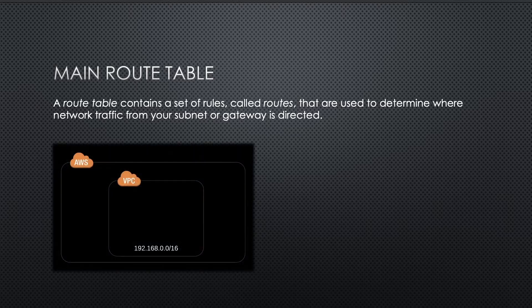When you create a VPC, AWS will automatically create a special main route table. It controls the routing for all subnets that are not explicitly associated with any other route table.